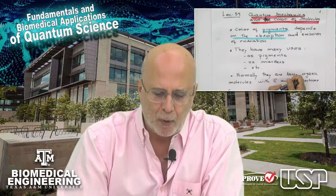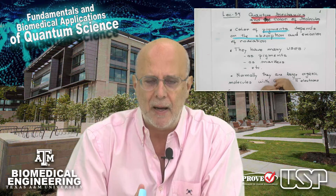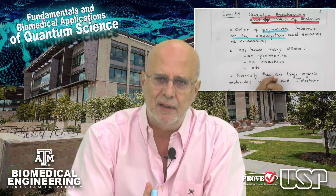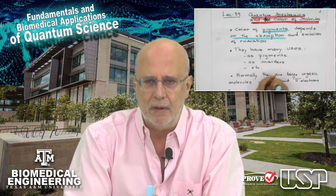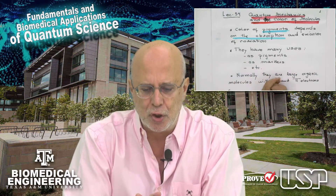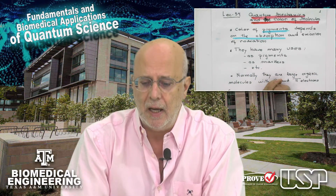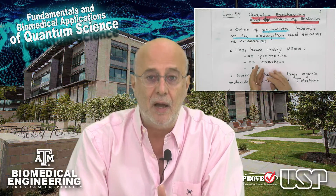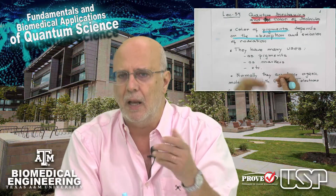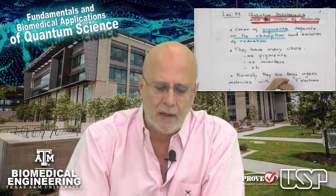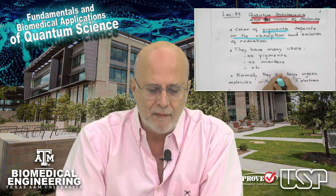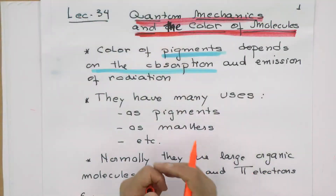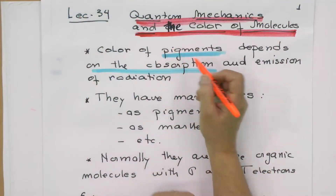I already told you that electromagnetic radiation interacts mostly with the electron — with the charge distribution of the electron. We saw some applications of NMR and EPR, where we also interact with the spin of the electron or the spin of nuclei. Today I want to expand and spend some time speaking about colors and pigments.